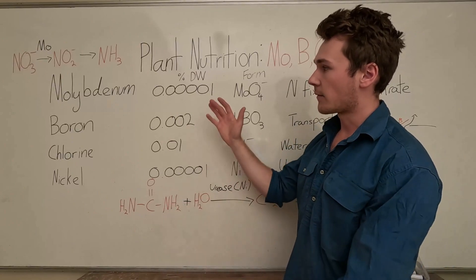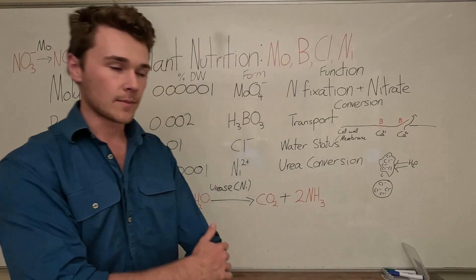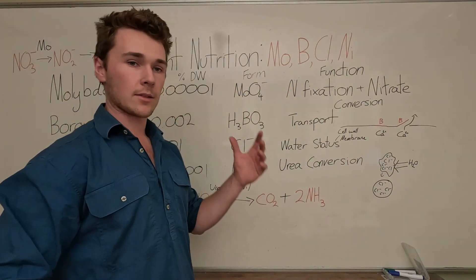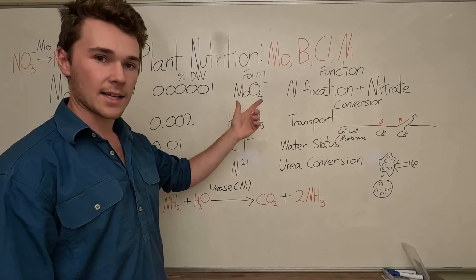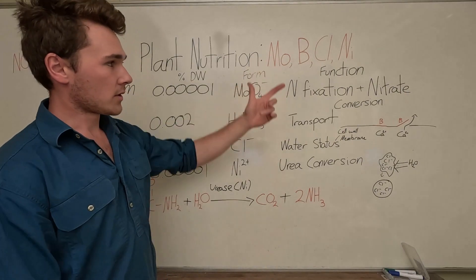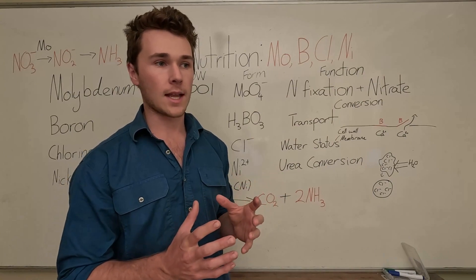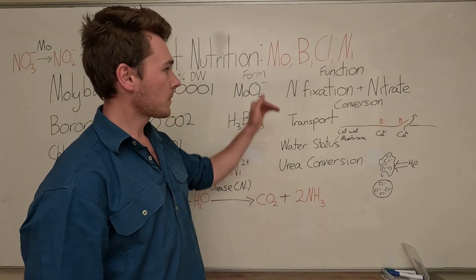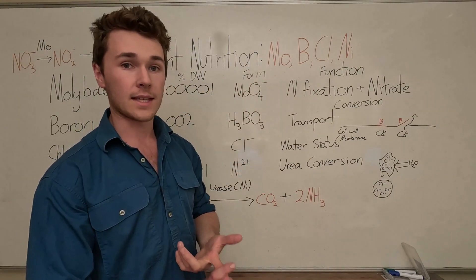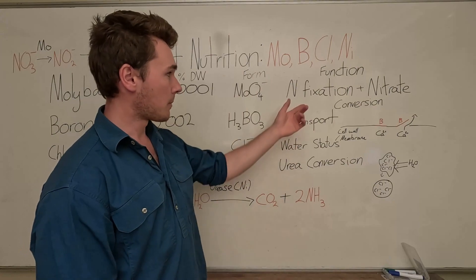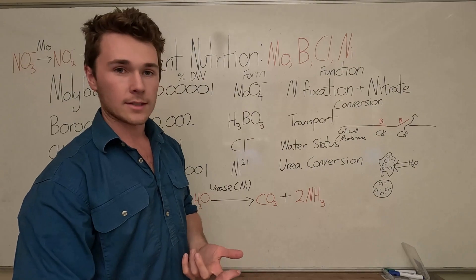It has a very important role in nitrogen use. It's absorbed as molybdate, which is basically the molybdenum with some oxygen attached to it. Its main functions are: first, nitrogen fixation in our legumes. It's an important cofactor in a lot of the enzymes used in that. So if a legume does not have molybdenum, it won't be able to fix any nitrogen. It's very important that our legume crops have a sufficient amount of moly.